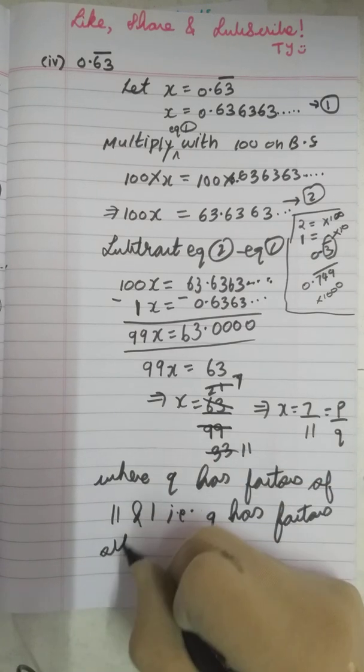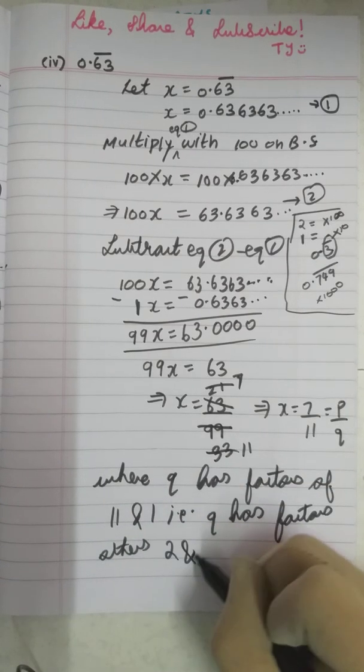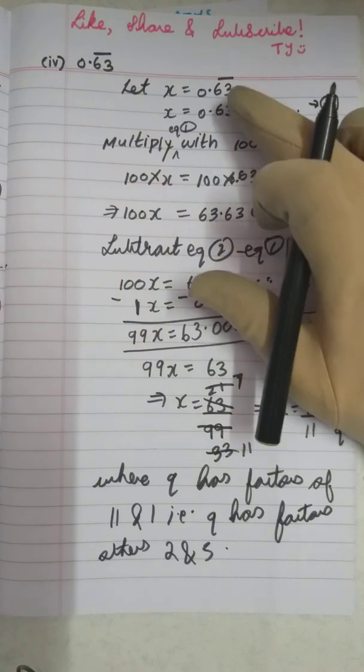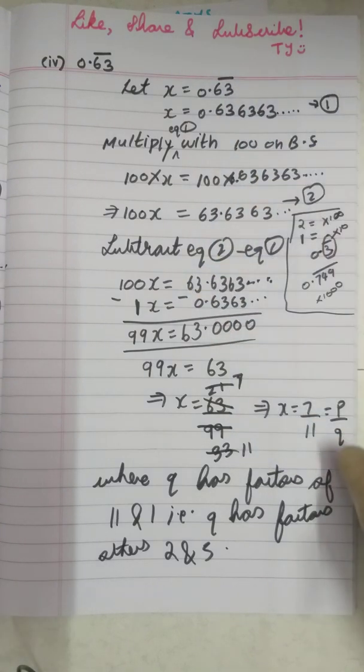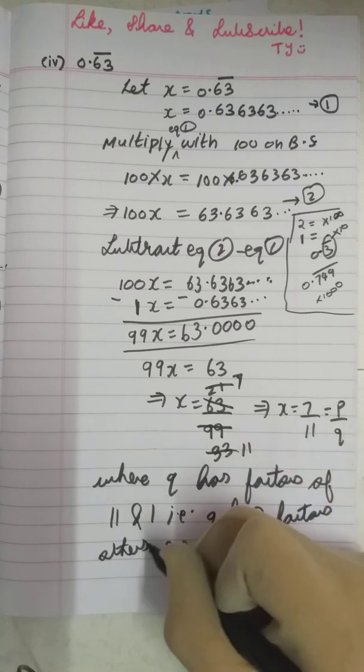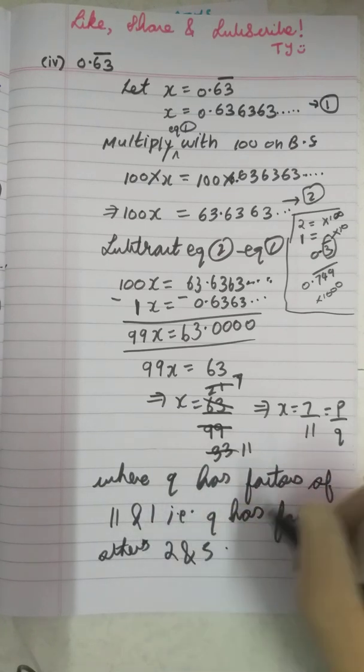Why are the factors not 2 and 5? Because this was non-terminating repeating decimal. We know from the theorem that if it is a non-terminating repeating decimal, then the denominator Q will not be of the form of 2^n × 5^m. That is, Q will not have factors as 2 and 5.